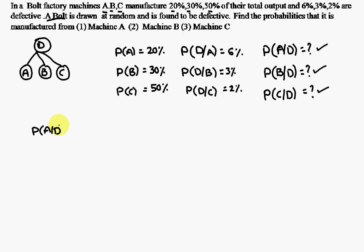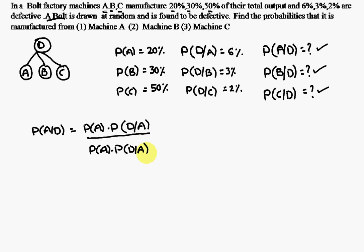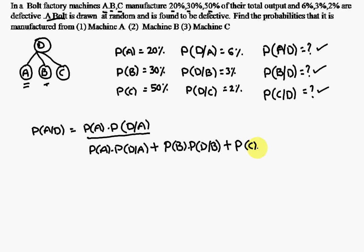For the first question, probability of A given D occurs. The formula is: probability of A multiplied by probability of D given A occurs, divided by — in the denominator — probability of A into probability of D given A, plus probability of B into probability of D given B occurs, plus probability of C into probability of D given C occurs.